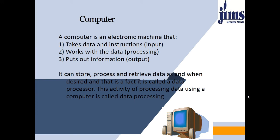The CPU is accountable for performing all the processing inside the computer system. Once the processing is done, the output is sent to the output unit. We have various output devices such as monitor and printer through which the user receives the output. So here we can see three basic operations: first is input of the data, then processing of the data, and finally the output. The computer can store, process, and retrieve data as and when desired.